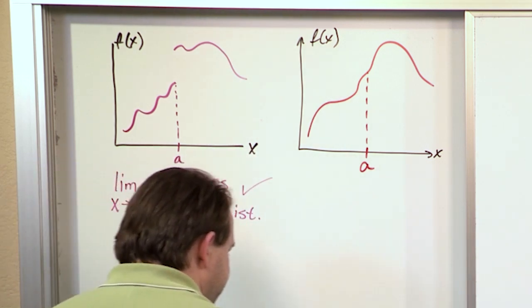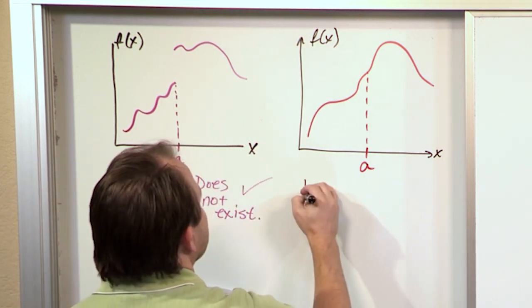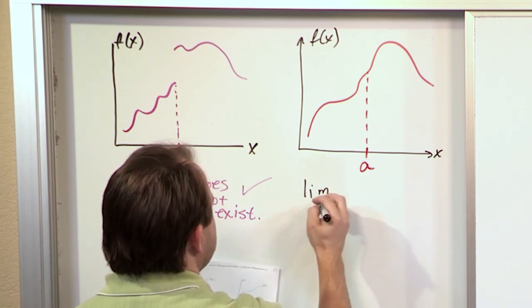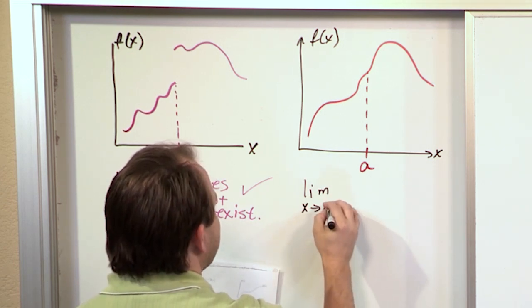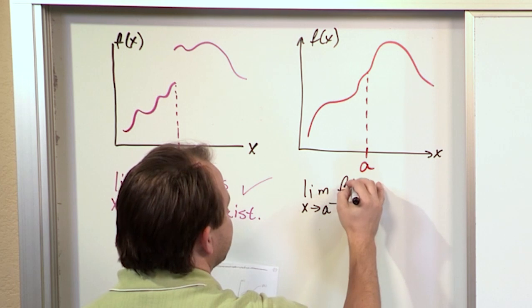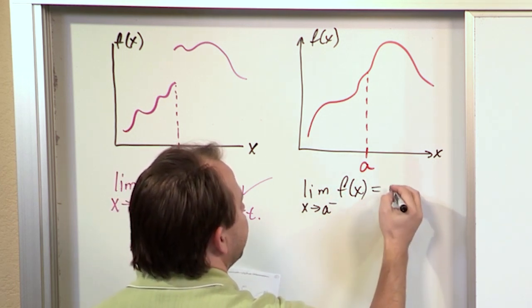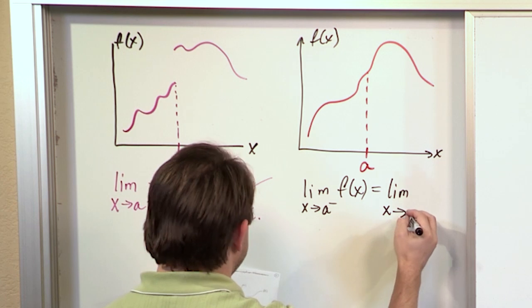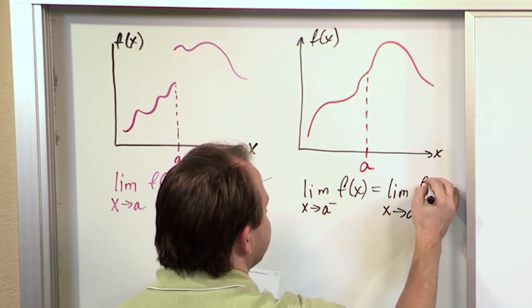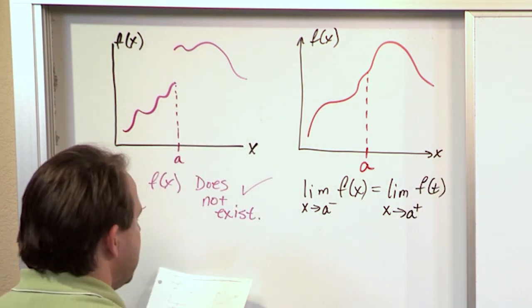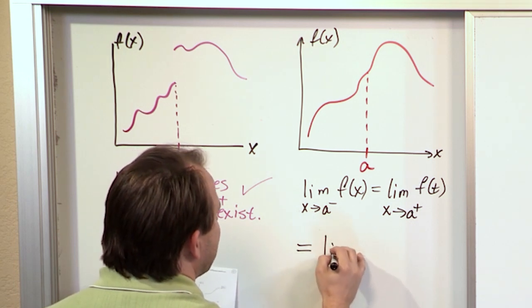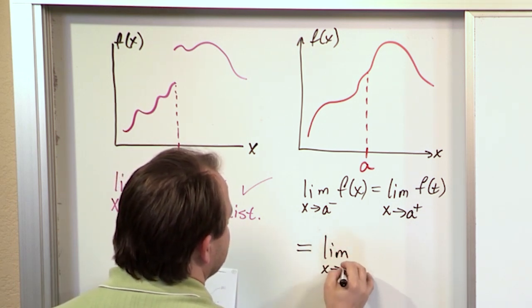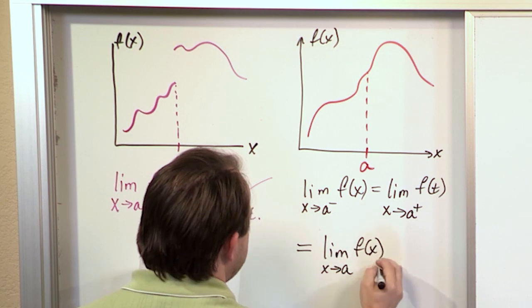If we have this situation, then we would basically say the limit as x approaches A from the left of this function is equal to the limit as x approaches A from the right of this function.